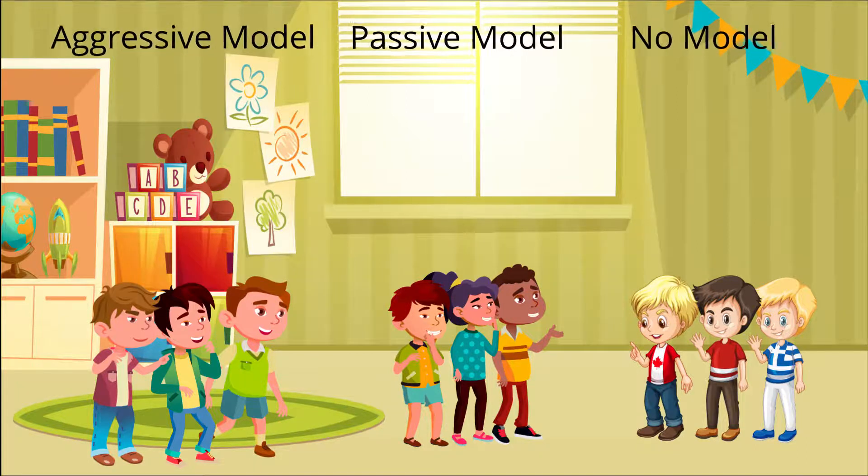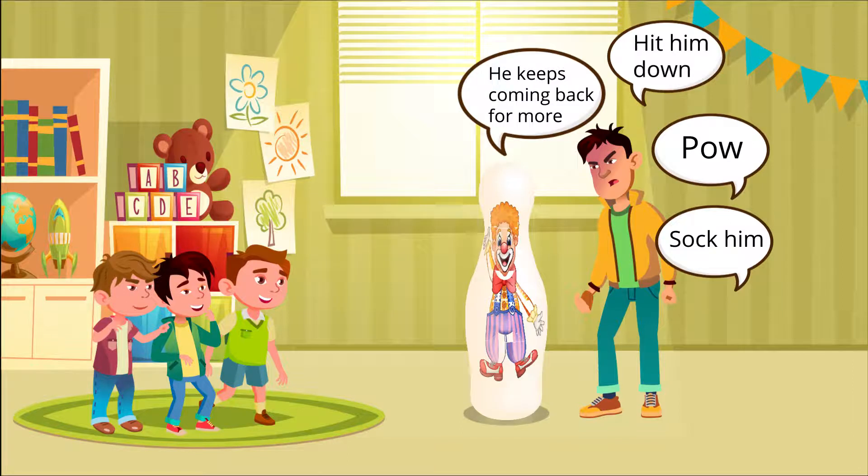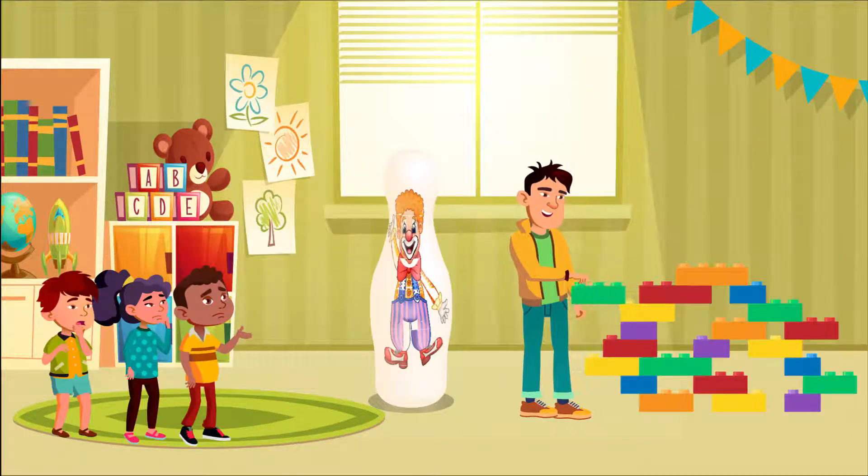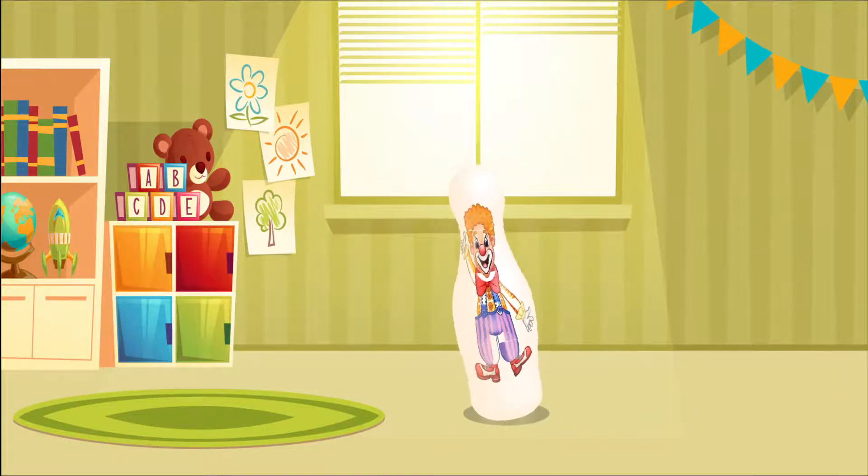The participants were young children from the university's nursery school. They were separated into three main groups and sent individually into a playroom with an adult model. One group observed an adult model aggressively handling a Bobo Doll. The second group was shown an adult model passively playing with other toys. The final group was the control group and thus had no model.